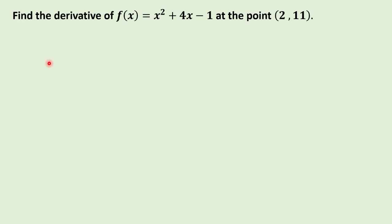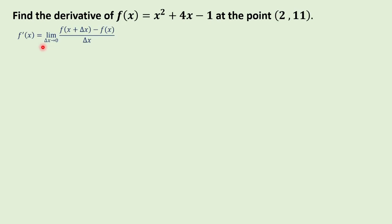Let us find the derivative of the function x squared plus 4x minus 1 at the point (2, 11). We would like to get the slope of the tangent line at x equals 2. To recall, using the limit process, this is how we get the derivative of a function.